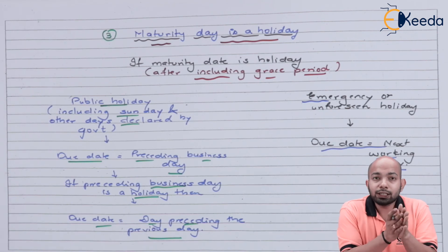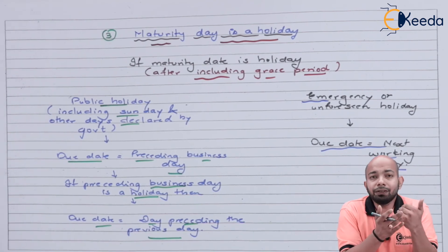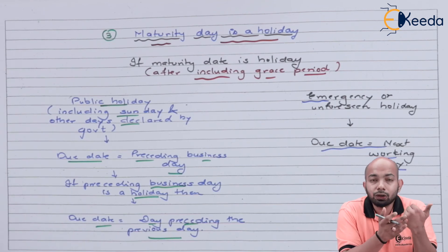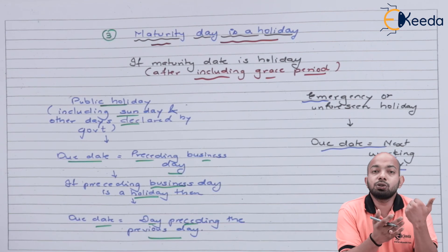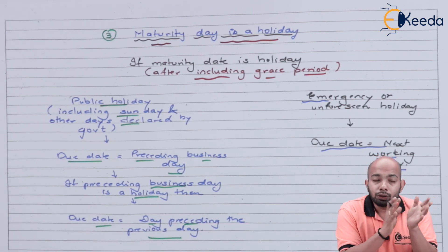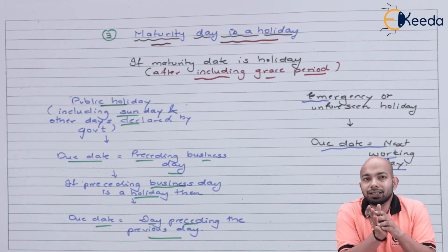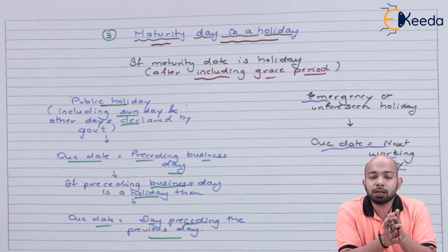If 24th December is also a public holiday, then 23rd December will be considered the due date. So in summary: for an emergency holiday, take the next working day; for a declared central government holiday, take the previous working day. If that previous day is also a holiday, go one day further back. I hope you are now aware of how the due date calculation works across all three situations. Thank you for watching — stay tuned with eKIDA and keep subscribing.